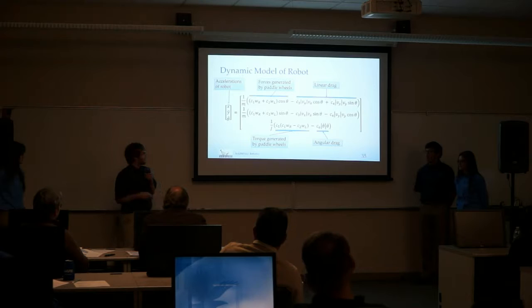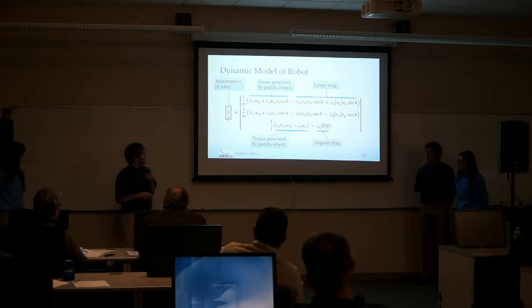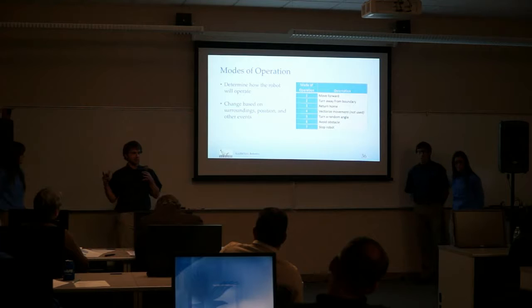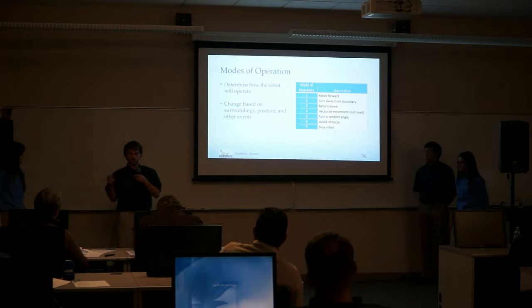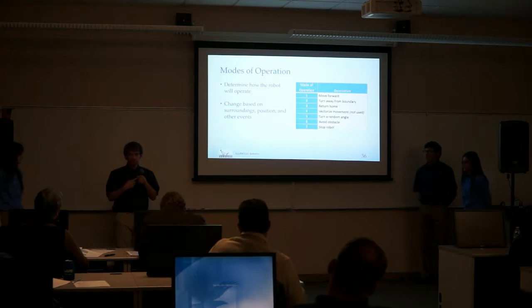Our robot operates off of seven different modes. Each mode acts almost like an instruction telling the robot what to do. These are all affected by the surroundings — whether an obstacle has been detected, the battery is running low, or the storage box is full — all these things affect which mode the robot enters.